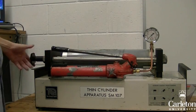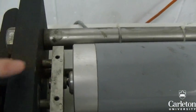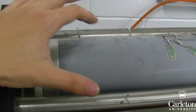For the closed ends case, loosen the screw bracing the cylinder, as you can see here. There should now be a gap between the frame and the cylinder.